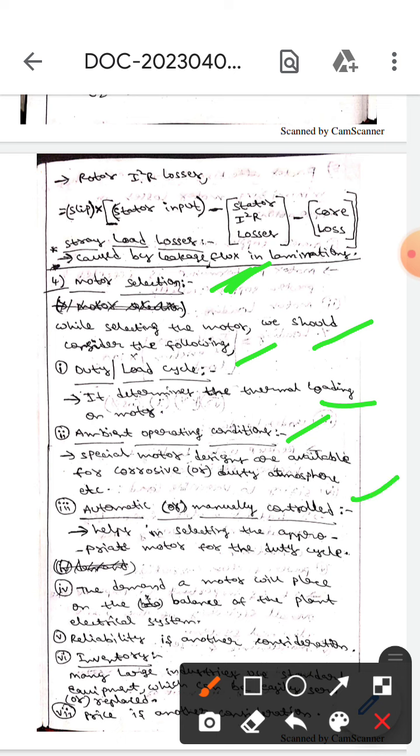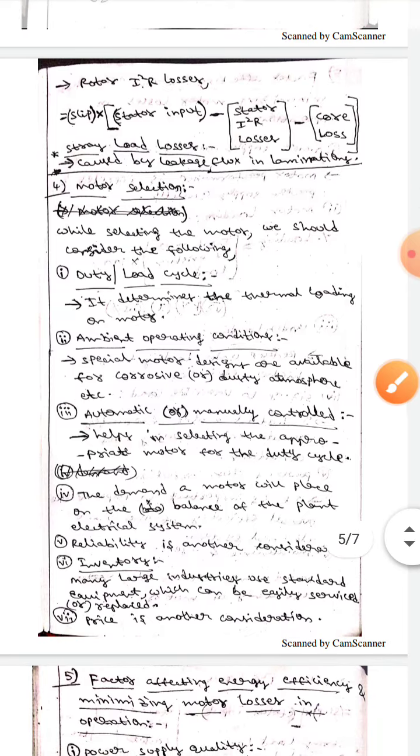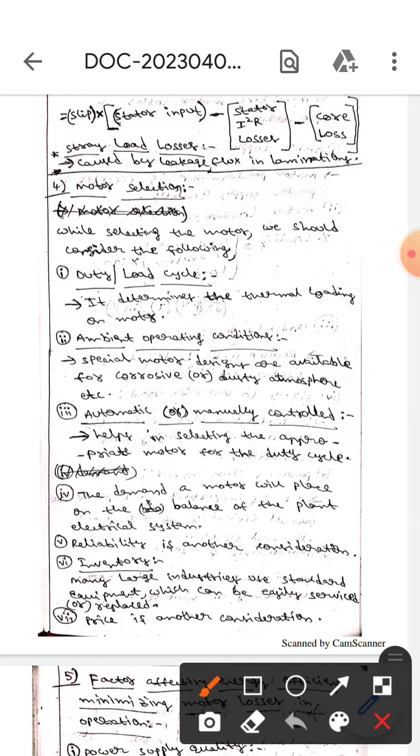The next one is automatic or manually controlled. This helps in selecting the appropriate motor for the duty cycle. The next parameter is reliability. We should consider the reliability of the motor while selecting the motor.